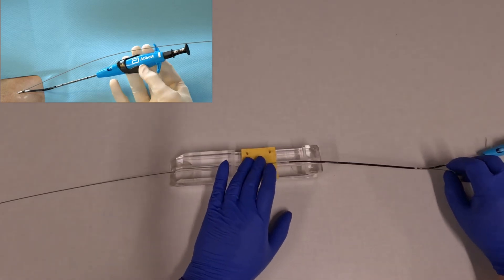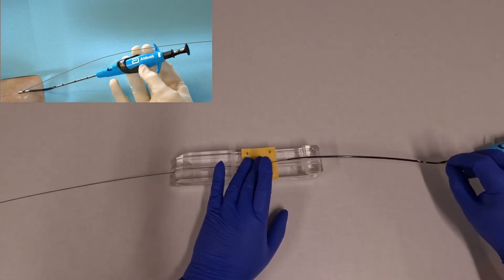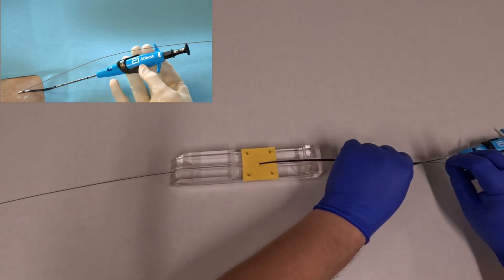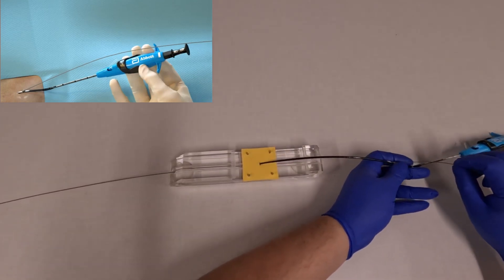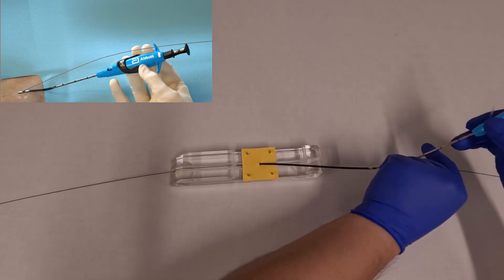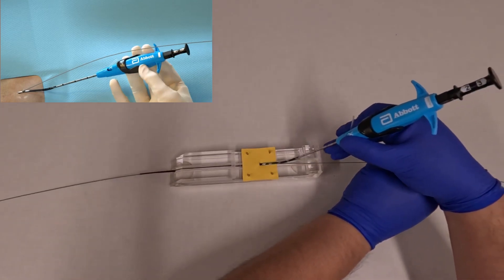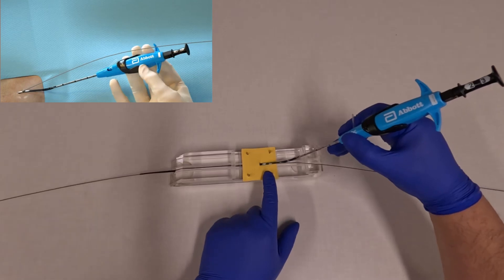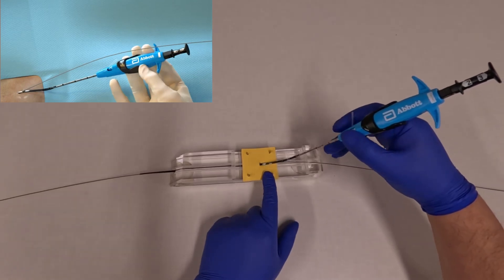Remember that you're maintaining manual hemostasis at the site until this point. As you advance the Perclose into the arteriotomy, the device will actually allow for hemostasis. So at this point you can relax and take off manual pressure.